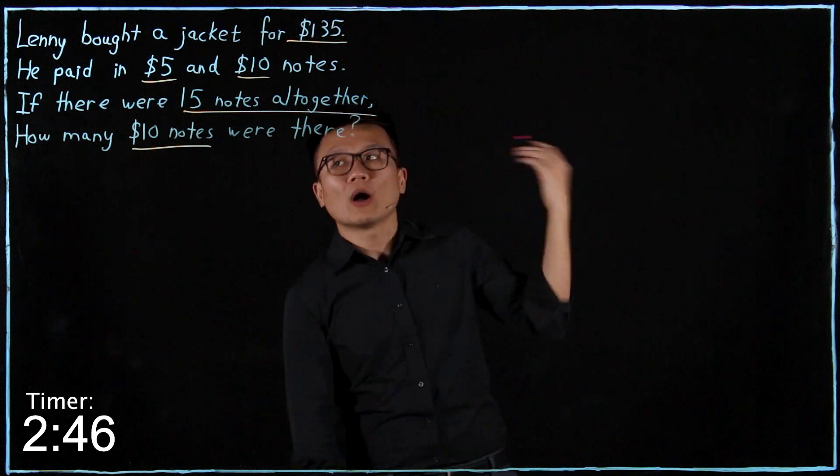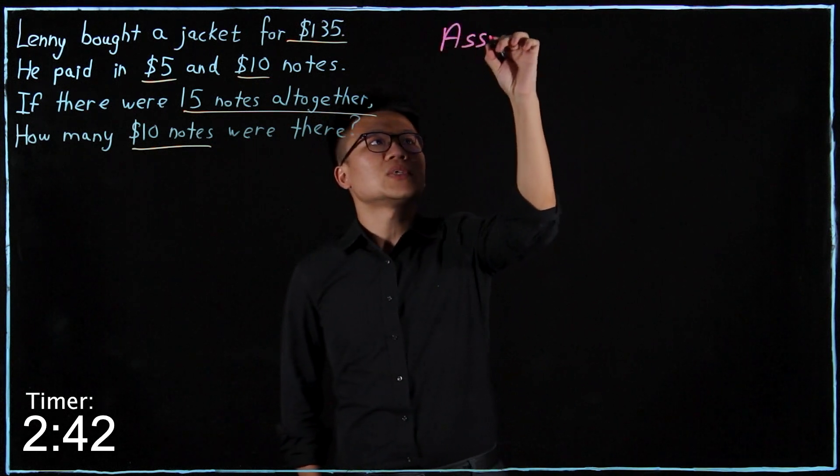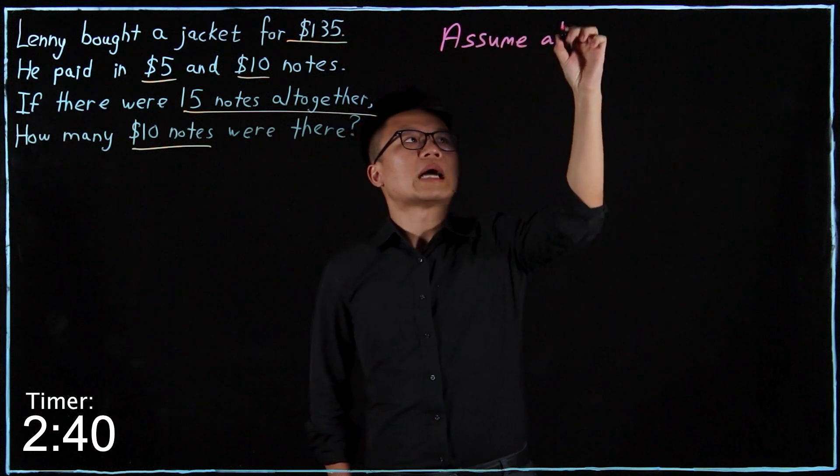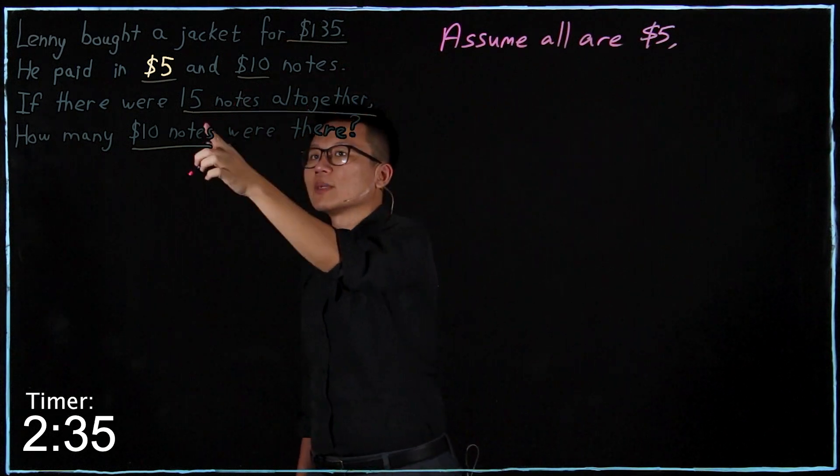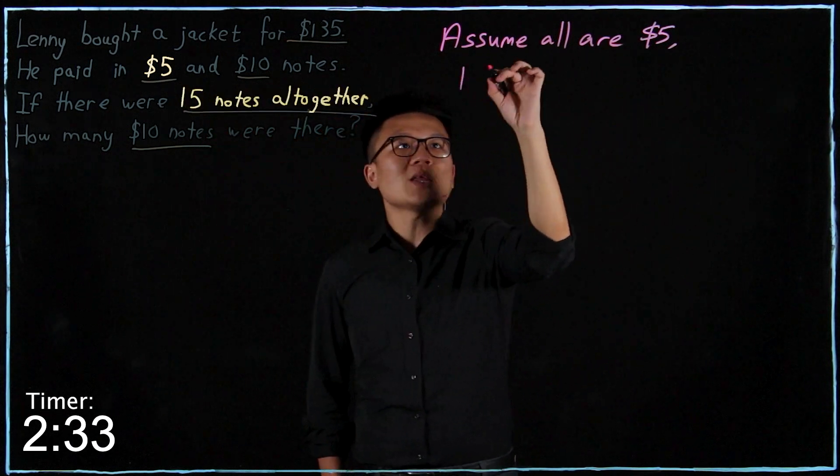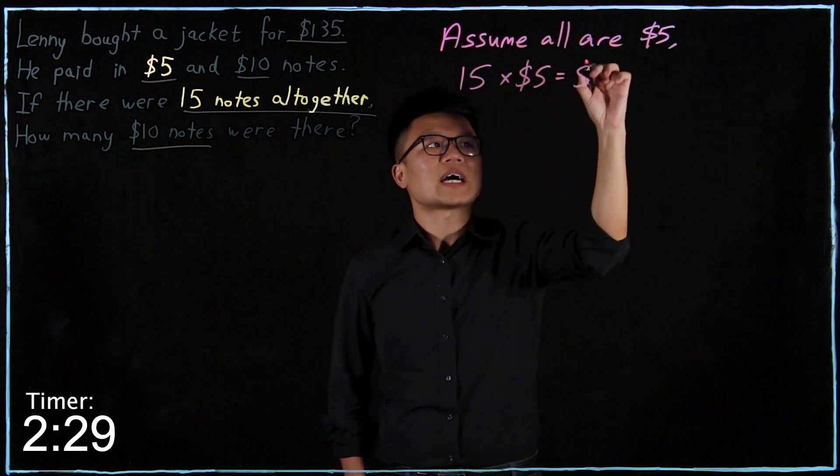So first of all, I will assume the opposite. Opposite in this case would be the $5 notes. So assume all are $5 notes. I'm supposed to have 15 notes. So the value of the 15 notes would be 15 times $5 equals to $75.